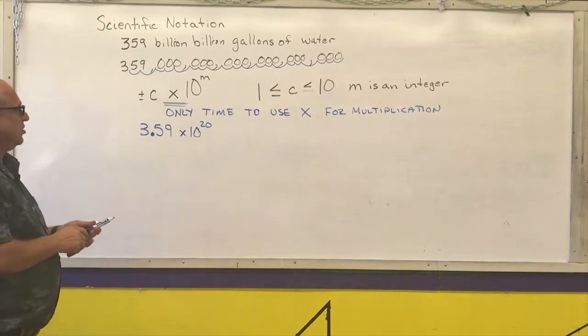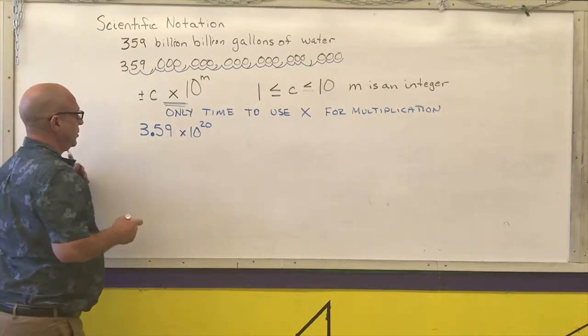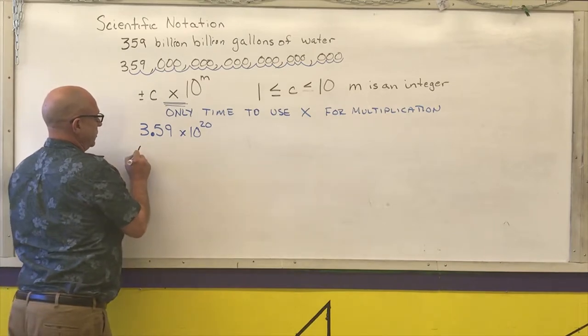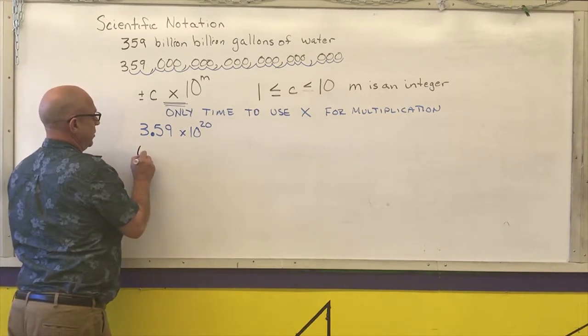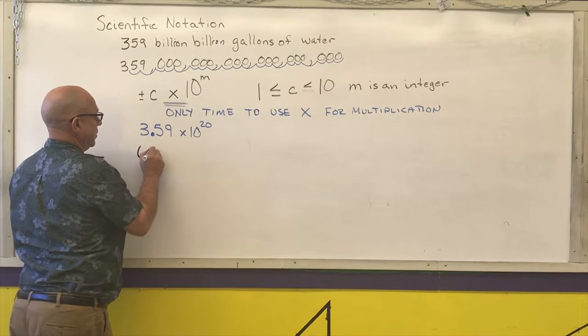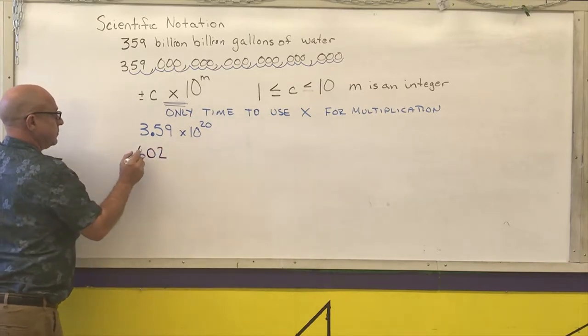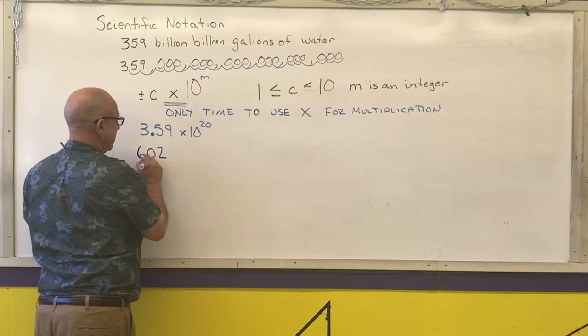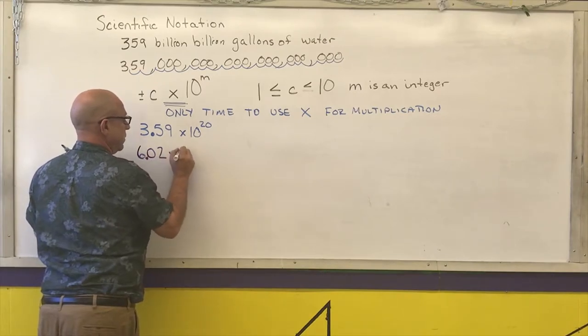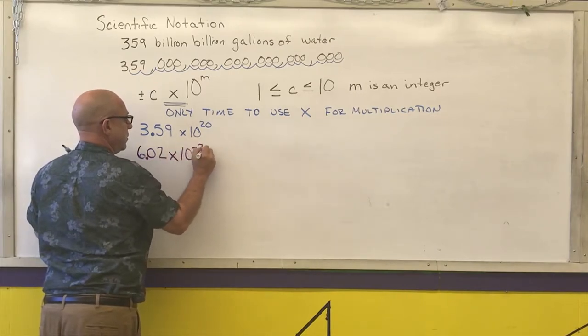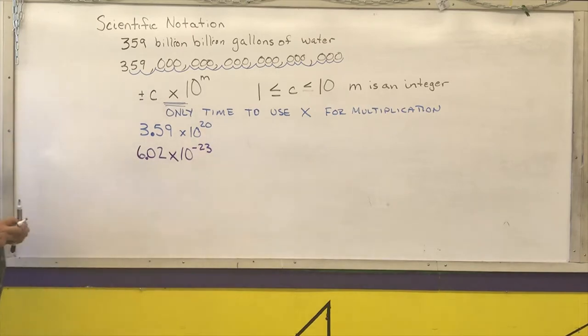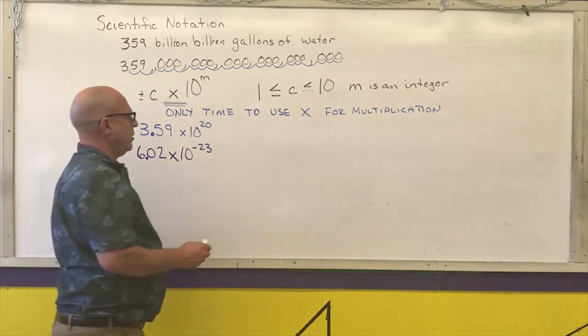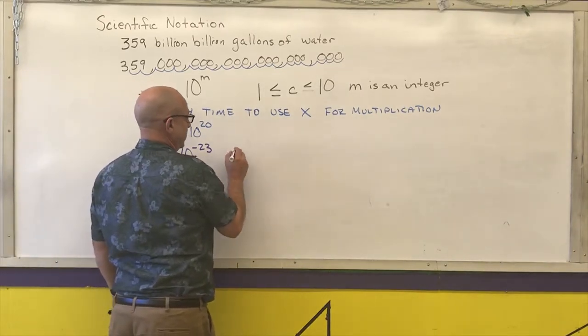Like I said, it could also be used for very small numbers. So Avogadro's number is 6.02 times 10 to the negative 23rd. If I wanted to write this number in regular decimal notation...